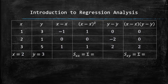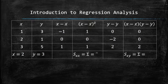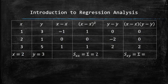We add the values in the fourth column to get S_xx. Then we add the values in the sixth column to get S_xy.